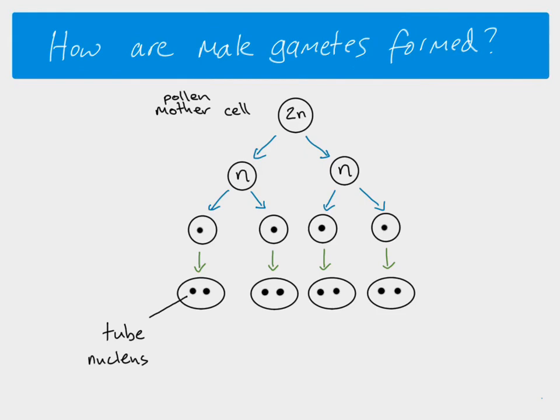One of these is the tube nucleus, and one of them is called the generative nucleus. These cells will then mature, so each of these cells becomes a pollen grain. One pollen grain contains two haploid nuclei: one is the tube nucleus, and one is the generative nucleus.